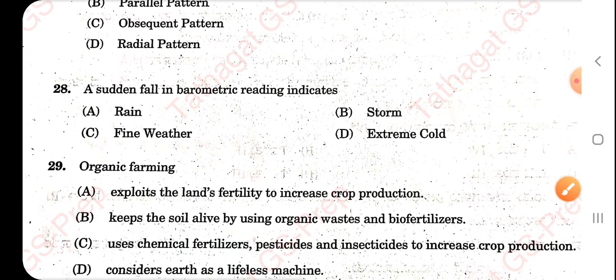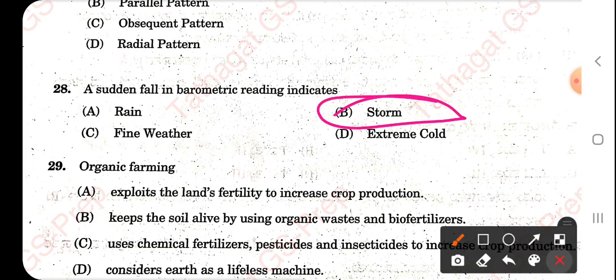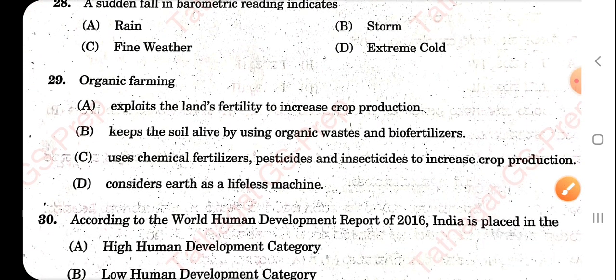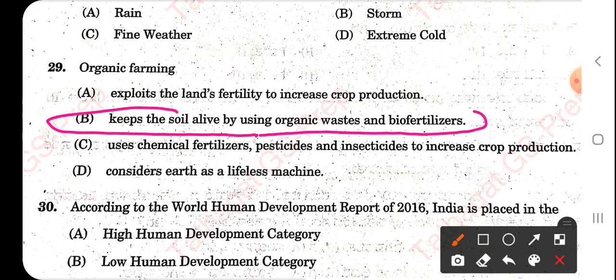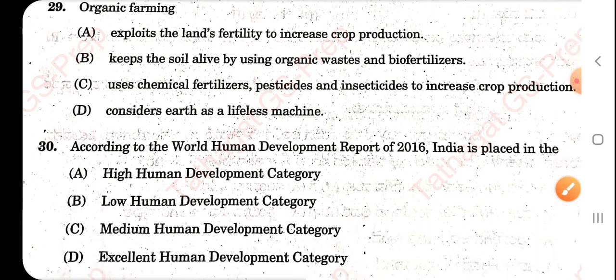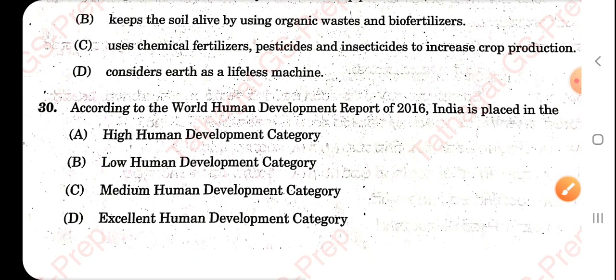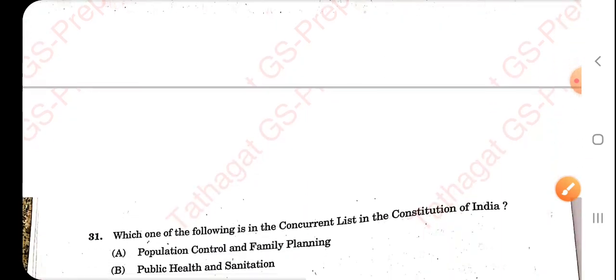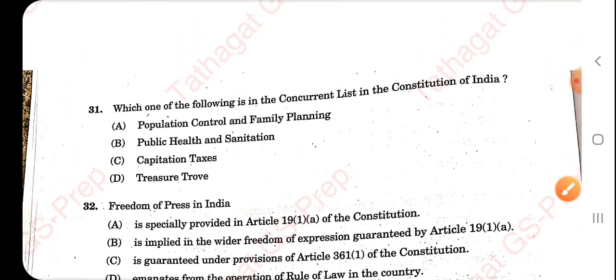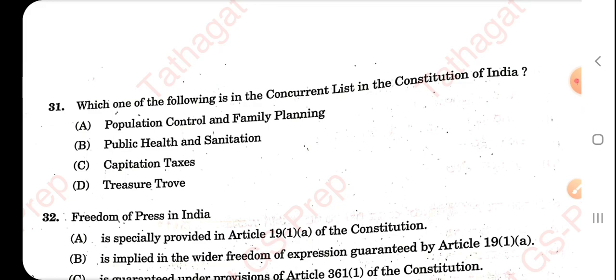A sudden fall of barometric reading indicates a storm — a GK question from geography. Organic farming means keeping the soil alive by using organic waste and bio-fertilizers. According to the World Human Development Report 2016, India is placed in the medium human development category.